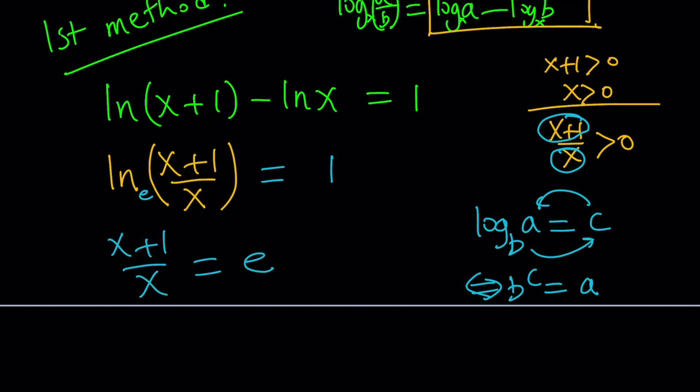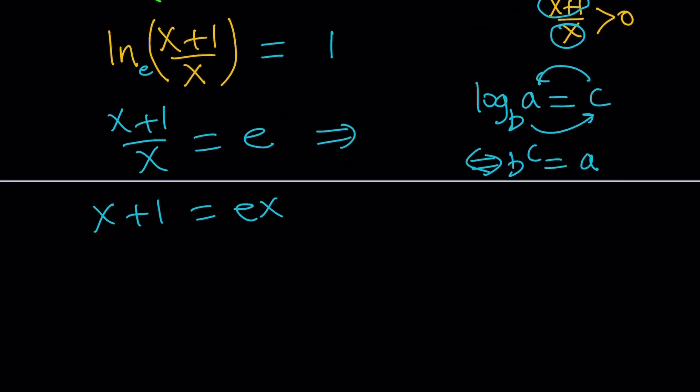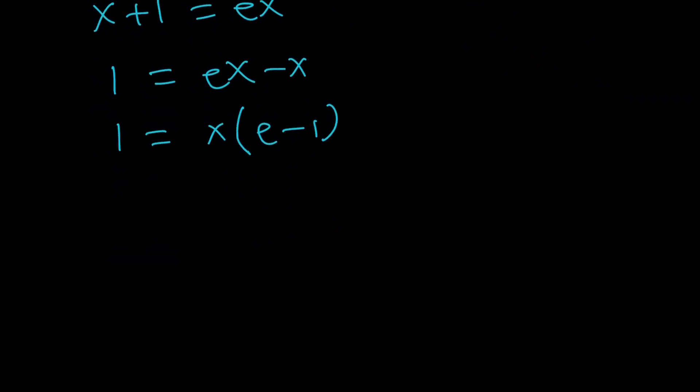So we can do that since the base is e here, it's invisible, but e to the power of 1 is going to equal (x+1)/x, which is e. From here, we can solve for x. Let's cross multiply: x+1 equals ex. Let's bring all the x's on the same side, and we're going to get 1 equals ex - x, and then 1 equals x times the quantity (e-1). And then finally, you can divide both sides by e-1, and that's going to give you x equals 1/(e-1).